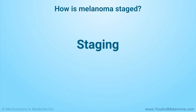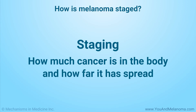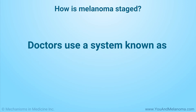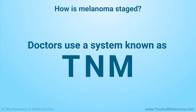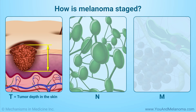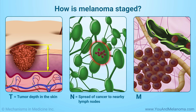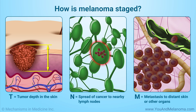Staging is a way of describing how much cancer is in the body and how far it has spread. Doctors do this using a system known as TNM, which can predict a patient's outlook. T is for tumor depth in the skin. N is for spread of the cancer to nearby lymph nodes. M is for metastasis, or spread of the cancer to distant skin or other organs. Doctors combine the T, N, and M to get an overall cancer stage.